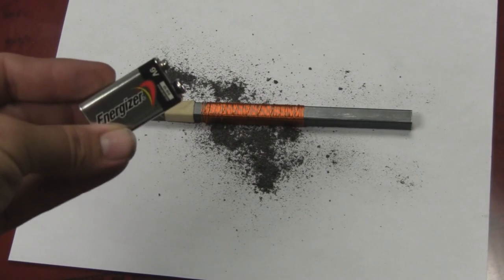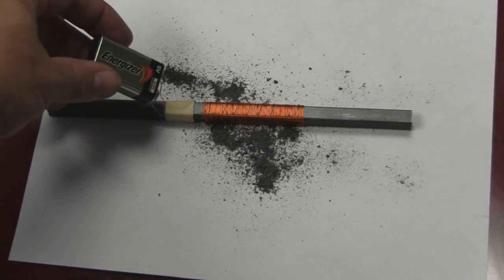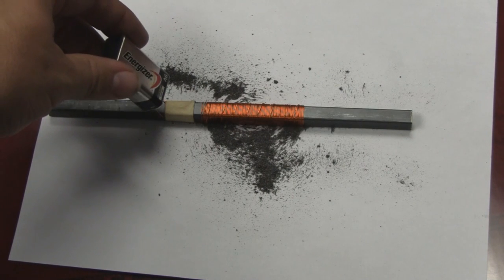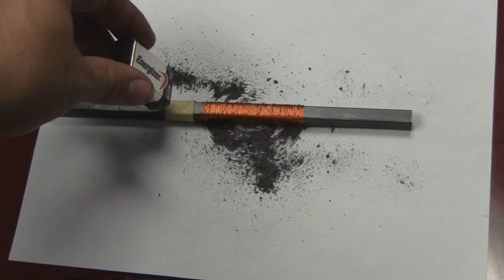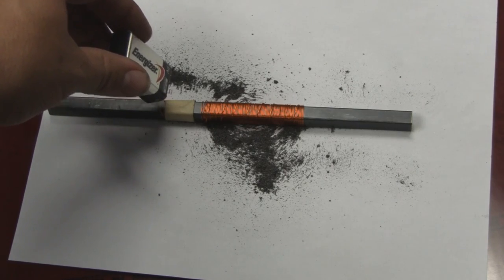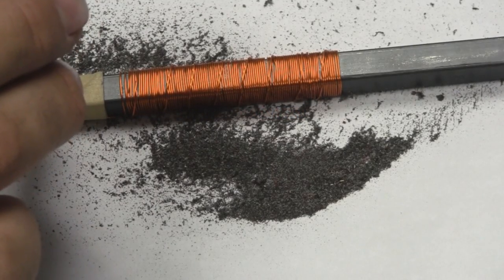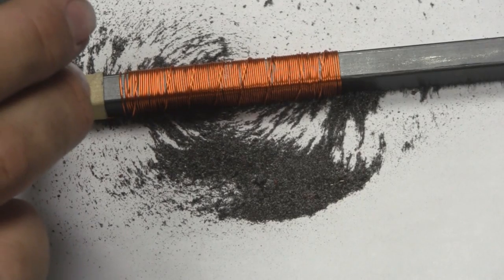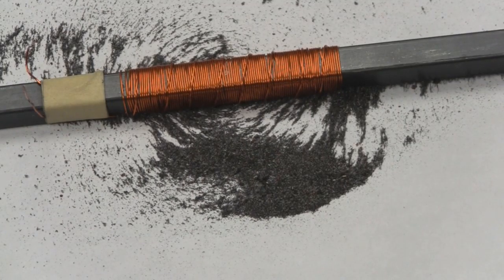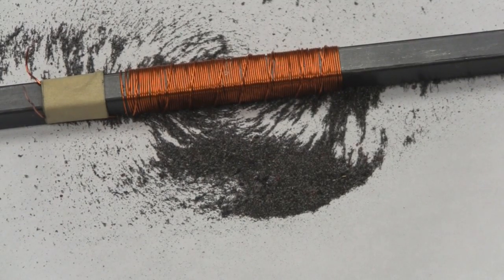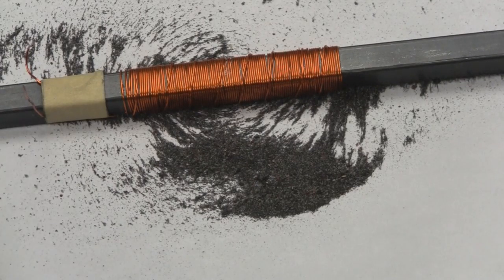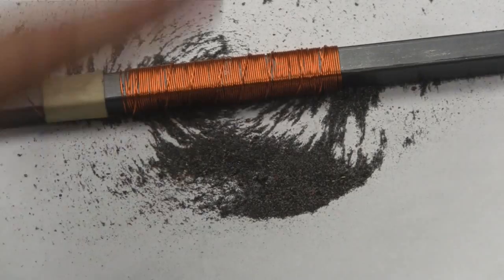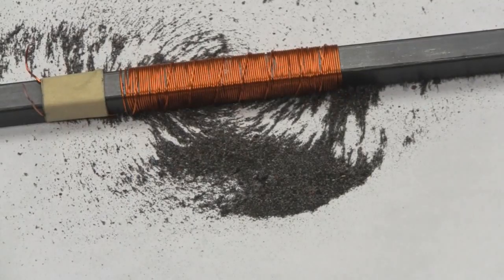So when I take this battery and I pass current through the coil, like that, you can actually see the filings will arrange themselves into a circular shape around the coil there. You can see that a magnetic field forms around the coil as well as around the steel bar here. The magnetic field actually gets transferred and magnetizes the entire bar.